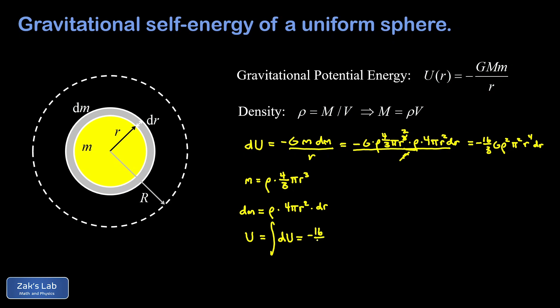That's negative 16 thirds, G rho squared, pi squared, and then I have my integral of r to the fourth dr. This is an r integral and I have to cover the entire construction of the sphere, and that means I go from r equals zero all the way up to the final radius that we called big R.